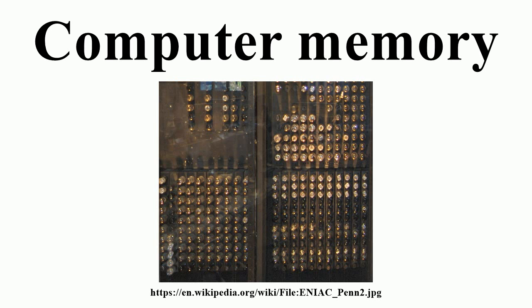Efforts began in the late 1940s to find non-volatile memory. J. Forrester, Jan A. Rajman, and Nguang developed magnetic core memory, which allowed for a recall of memory after power loss. Magnetic core memory would become the dominant form of memory until the development of transistor-based memory in the late 1960s.